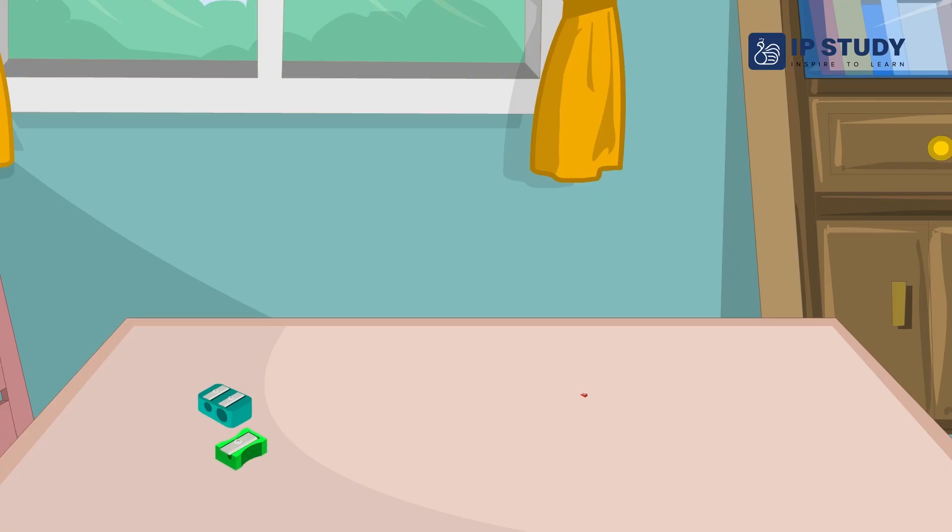Look at these sharpeners. We have two sharpeners on one side and five sharpeners on the other side. You know that two sharpeners are less than five sharpeners. So two is smaller than five.